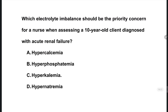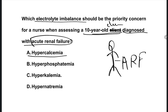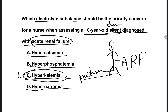The next question: which electrolyte imbalance should be the priority concern for a nurse when assessing a 10-year-old client diagnosed with acute renal failure? Options are: hypercalcemia, hyperphosphatemia, hyperkalemia, hypernatremia. The right one is option C, hyperkalemia — we need to check for potassium levels in a child with acute renal failure. Acute renal failure is a temporary loss of renal function; it is not chronic. Chronic is long-term, acute is short-term.